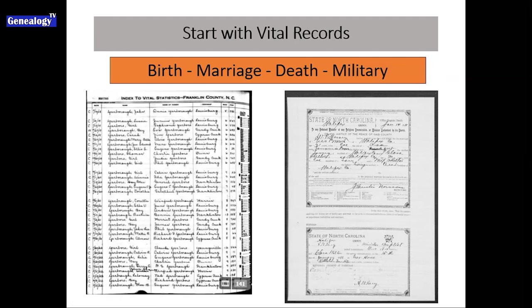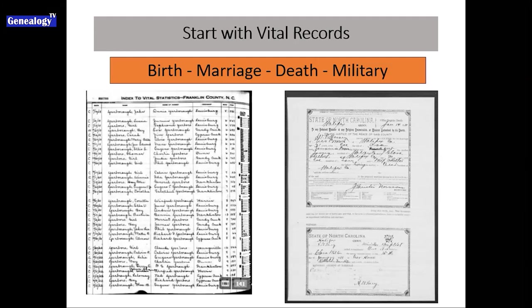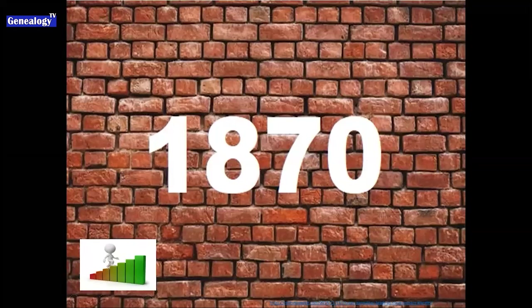On marriage records — and this is true in most states — you will find the parents' names for both the bride and groom. That marriage record is taking you back a generation, providing names you did not know. This example is from Halifax County, North Carolina, and it shows the parents' names for the bride and groom. So after you've gotten through all the vital records and worked your way backwards for your ancestor, start with yourself and work backwards from there.